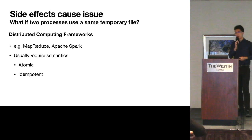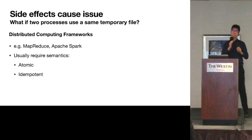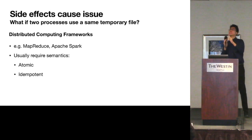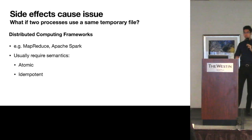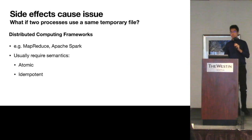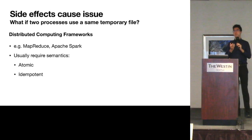In distributed computing frameworks like MapReduce and Apache Spark, they usually require two semantics for executed functions: the side effects need to be atomic and idempotent. Atomic means the programs' reads and writes cannot be interleaved — each transaction cannot be further broken down. Idempotent means that if the program is executed more than once, the side effects will remain the same.